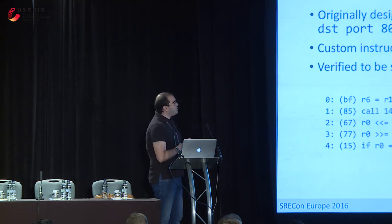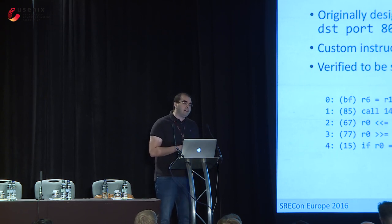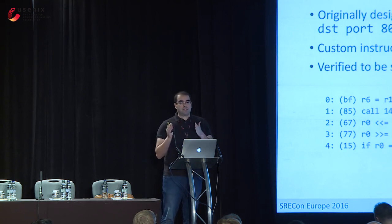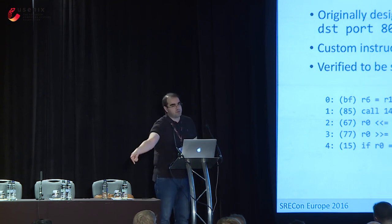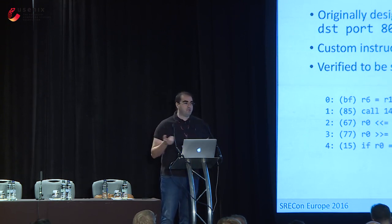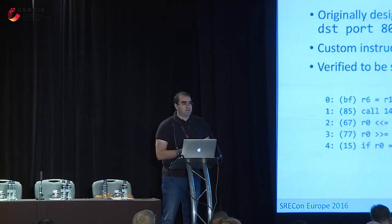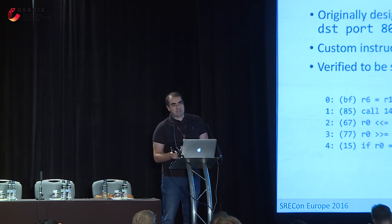The instruction set is pretty simple — maybe 20 to 30 instructions, assembly-like, all the same size. You wouldn't want to write these by hand, so there are tools that take C code and produce BPF bytecode. One nice thing is that the kernel can compile it down to native instructions via just-in-time compilation — similar to taking Java bytecode and running it natively. Another nice attribute is that BPF programs are theoretically completely safe: they can't crash or hang your kernel.